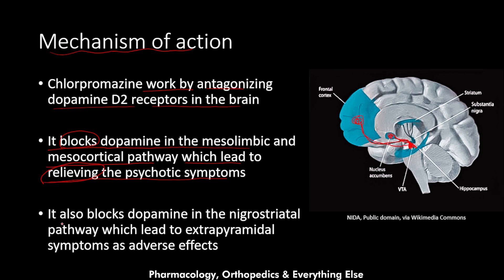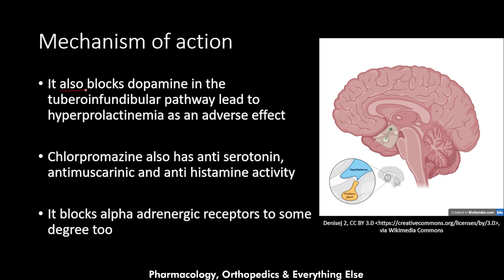Chlorpromazine also blocks dopamine in the nigrostriatal pathway, which leads to extrapyramidal symptoms as adverse effects. The nigrostriatal pathway connects the substantia nigra with the striatum. When blocked by chlorpromazine, this leads to extrapyramidal side effects such as tremor, dyskinesia, akathisia, and dystonia.